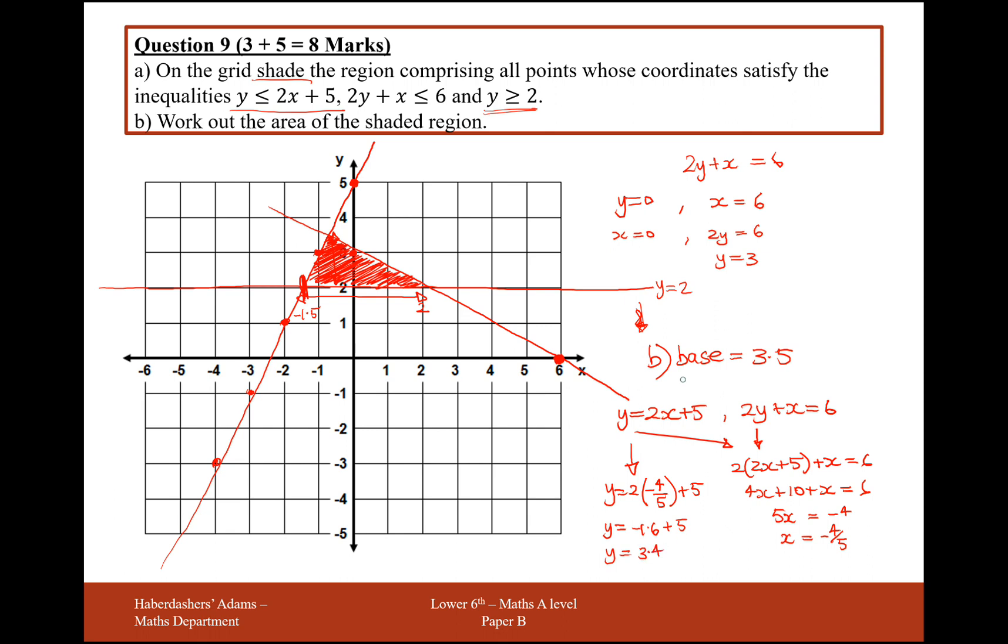So the height of the triangle, where it's going to have a coordinate of 3.4, but on the triangle, it's going to have a height of 1.4. So we need to do half of 3.5 times 1.4, which will equal 2.45 units squared.